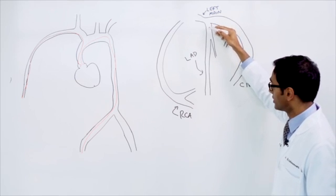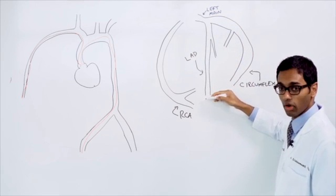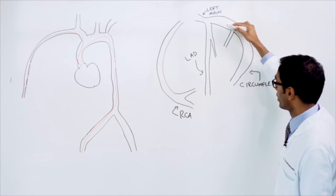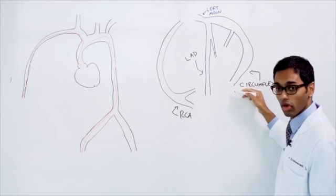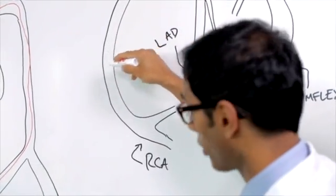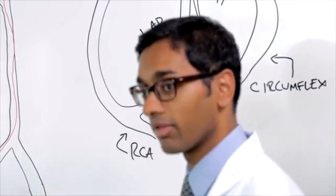The LAD, or left anterior descending, comes down the front of the heart. The circumflex coronary artery comes around the side of the heart. The RCA, or right coronary artery, comes around the back of the heart.